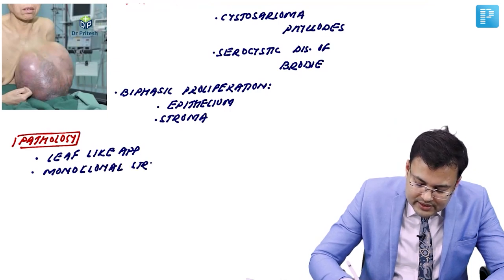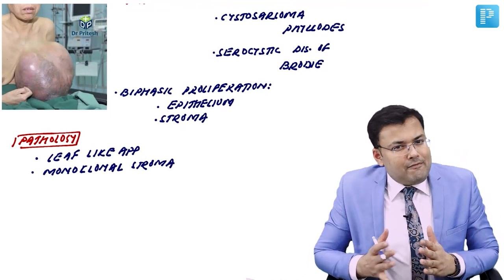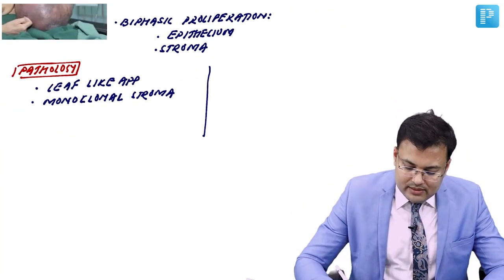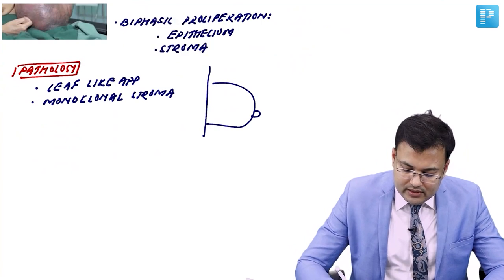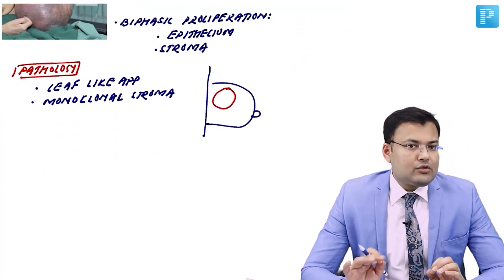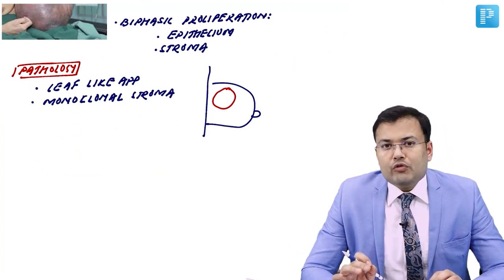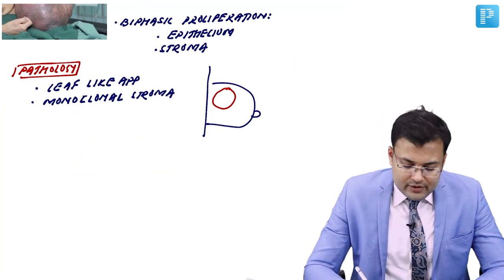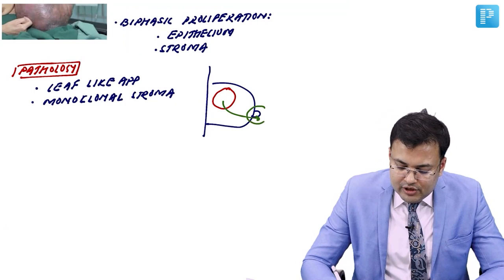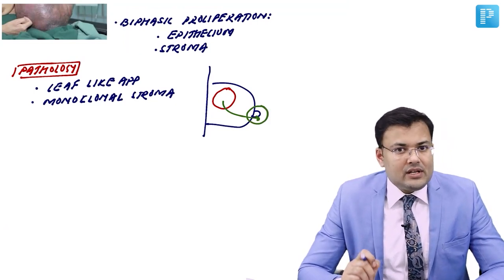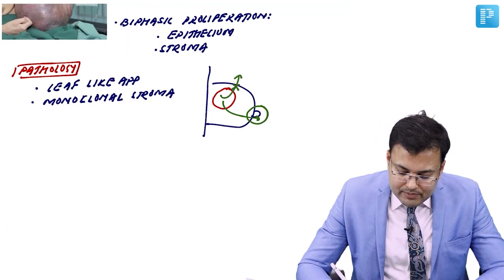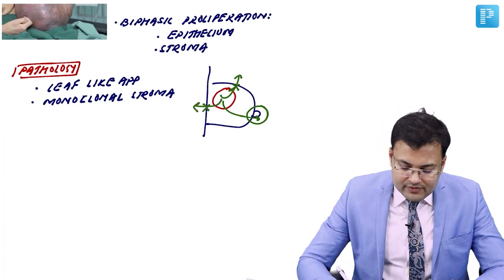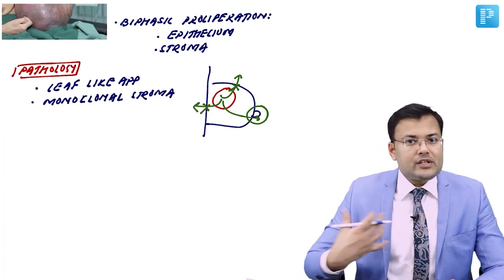The tumor has very rapid growth and the affected breast is massively enlarged. The feature of cystosarcoma phyllodes is that the tumor does not involve the nipple, does not involve the breast skin, and does not involve the chest wall. Therefore, you will not find nipple retraction, deviation, or ulceration. There is no skin fixity.